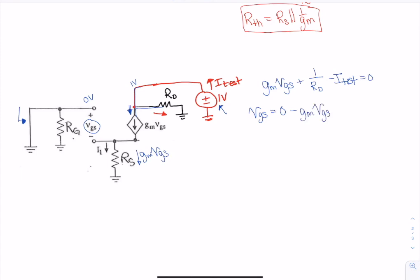Is zero minus, and now the current going through i_rs is this gm vgs, so I have gm vgs times rs. And I have to combine all the vgs's rs over to this side equals to zero.